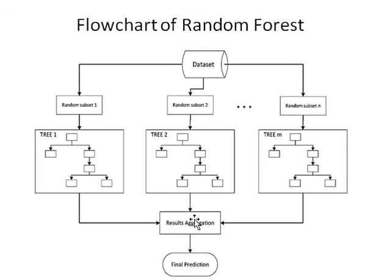In a regression model, we take the mean or median of all predictions — that is, the prediction from the 1st Decision Tree, prediction from the 2nd Decision Tree, prediction from the nth Decision Tree. We aggregate by taking the mean or median of all Decision Tree results and make the final prediction.